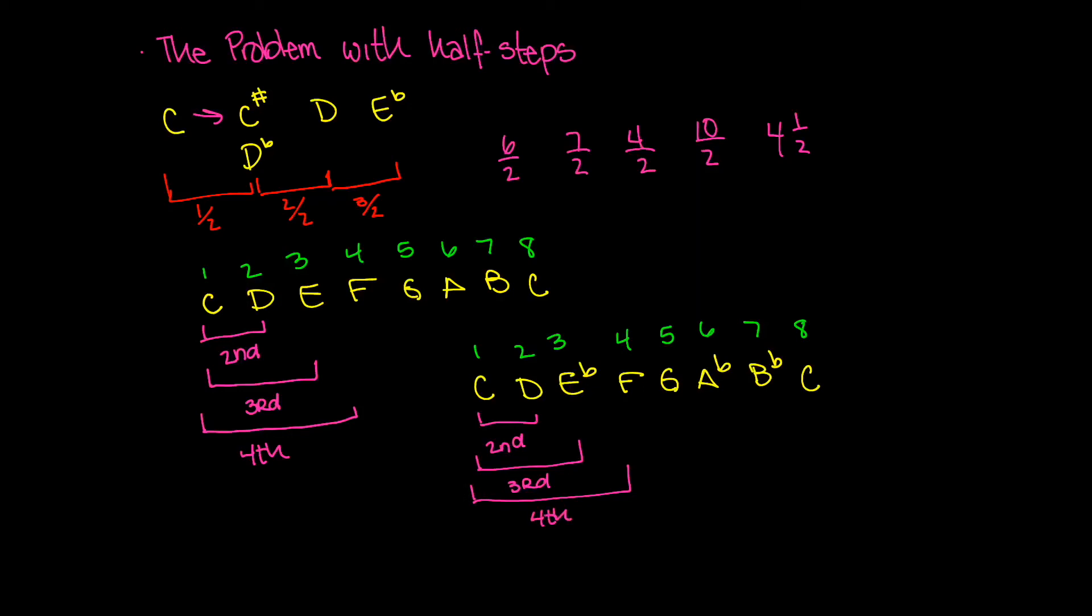And hopefully right here, you have a problem with this because we're calling C to D, that's a second. Yeah, sure. We have a second here, but now we're calling C to E a third. And here it's C to E flat is a third. And this is the exact idea of what's wrong with using general intervals, right? So if I say a third, what kind of third am I talking about?